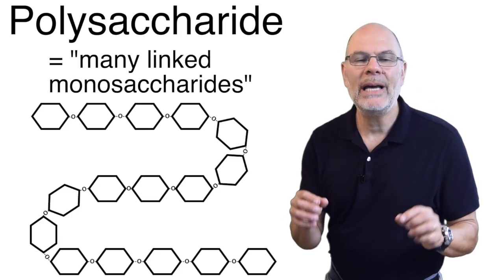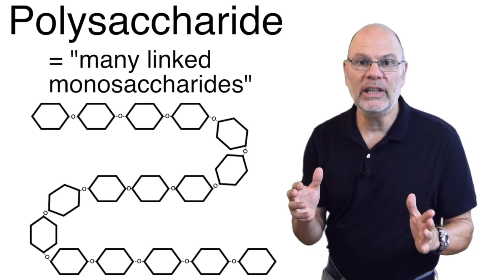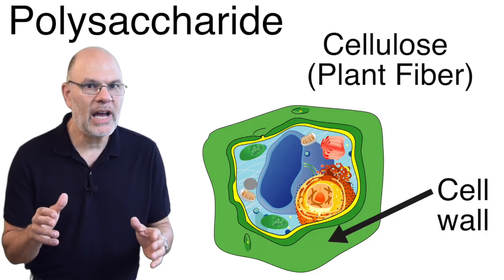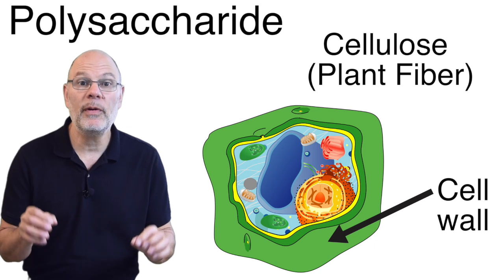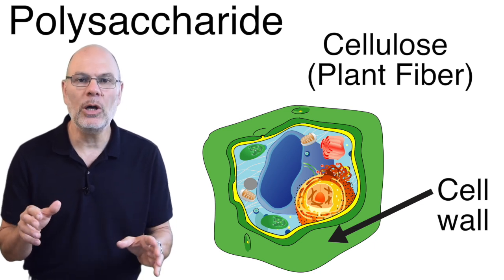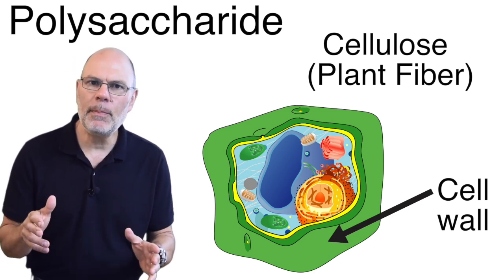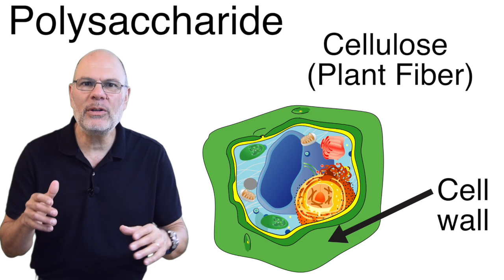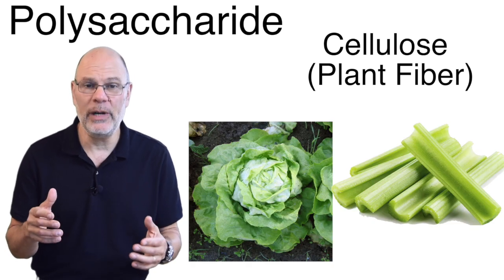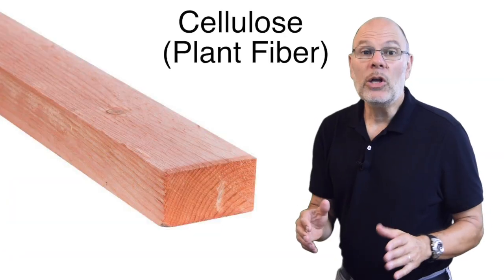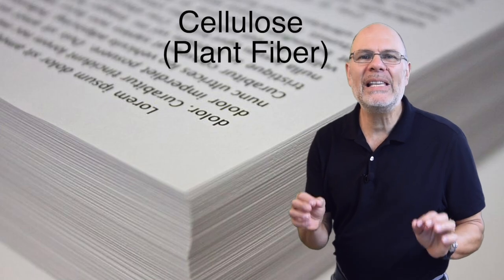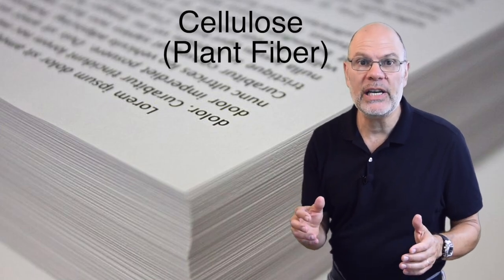Starch is a polysaccharide. Many monosaccharides link together. Another polysaccharide isn't for energy storage, but for structure. It's cellulose, or plant fiber. It makes up plant cell walls, and it's found in foods like lettuce, celery, and other vegetables. Cellulose is also in wood, cotton, and paper, the basic biomaterials of civilization.